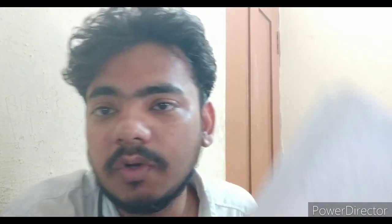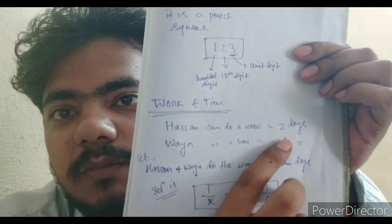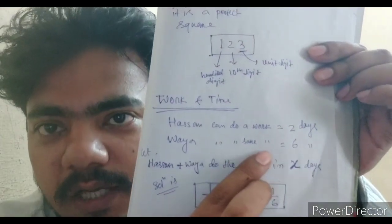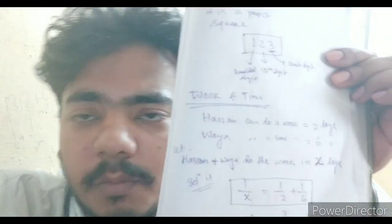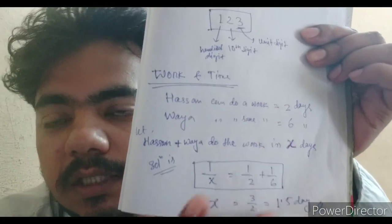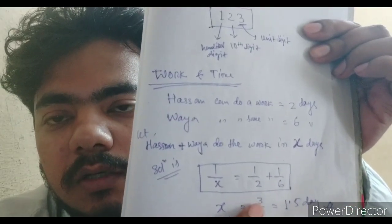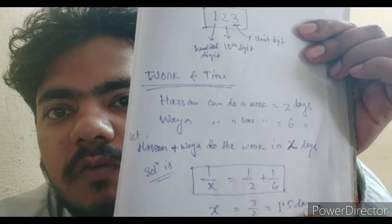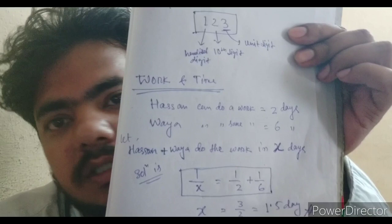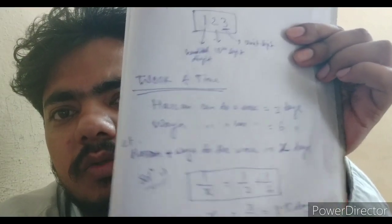The last topic is work-time problems. Suppose Hassan can do a work in 2 days and another person can do the same work in 6 days. If they work together, how many days will it take? Let the combined time be x. Then 1/x = 1/2 + 1/6. Take the LCM and find x — the answer comes to 1.5 days. Just use the formula: 1/x equals the sum of the reciprocals of individual times, take LCM, and find x. That is your answer.